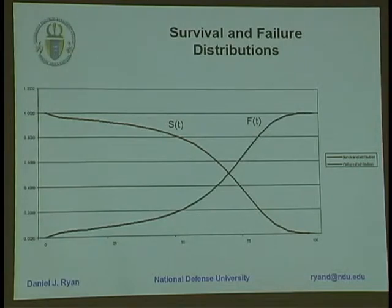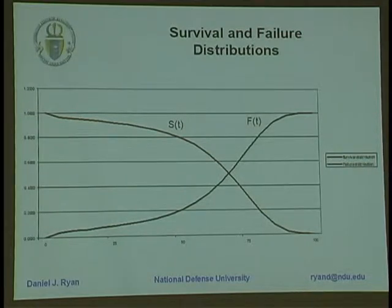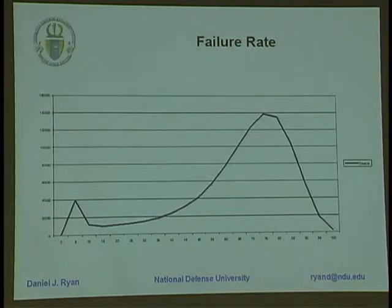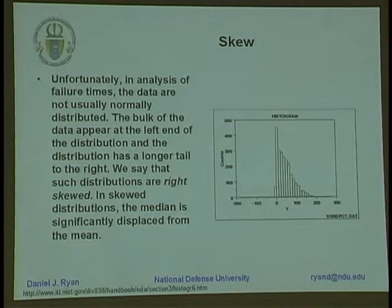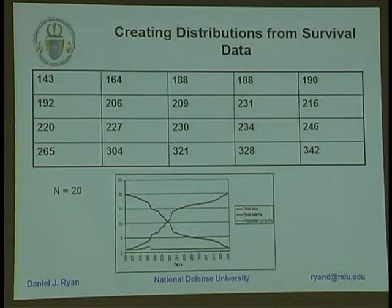S(t) is the survivor function — the number of systems still surviving at any given time t. F(t), the function we're looking for — the probability of failure — is 1 minus S(t); they simply are inverses of one another. This typical bathtub-shaped curve for the instantaneous failure rate is very commonly found in reliability theory and also in the medical literature. In practice, data is typically skewed — typically right-skewed. Not all systems that are operational will continue to be operational throughout the study; some will fail for reasons completely unrelated to what we're studying.